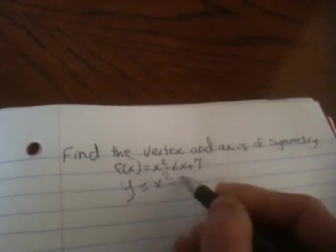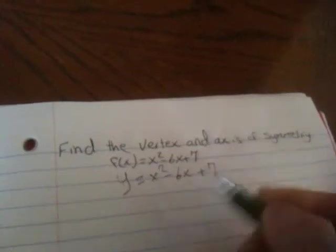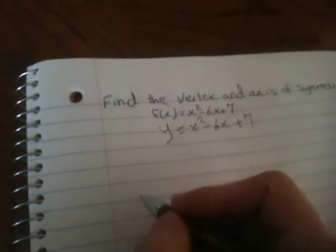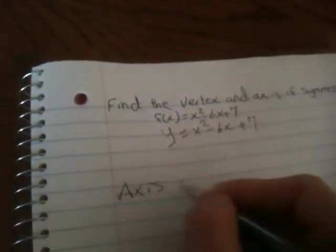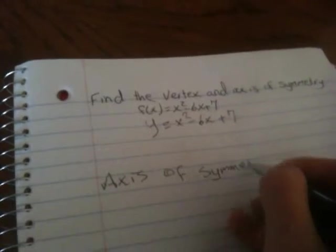First, we will find the axis of symmetry. Our axis of symmetry is -b/2a.